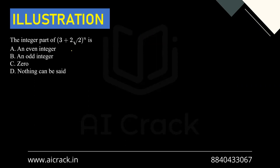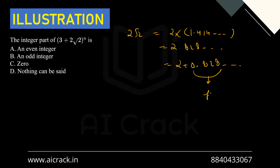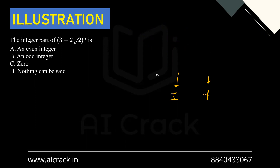Now let's start the second category: integral and fraction part questions. The question is: the integer part of (3+2√2)^n — is it any integer, an odd integer, or nothing can be said? First, recall that the fractional part function f satisfies 0 ≤ f < 1. For example, 2√2 ≈ 2.828, so it has integer part 2 and fractional part 0.828.